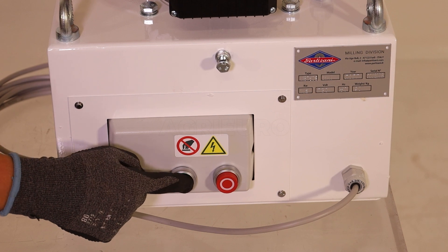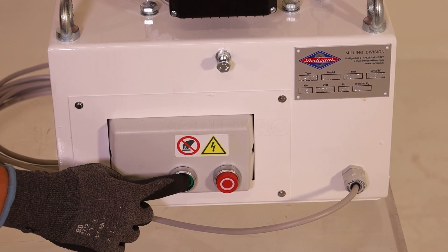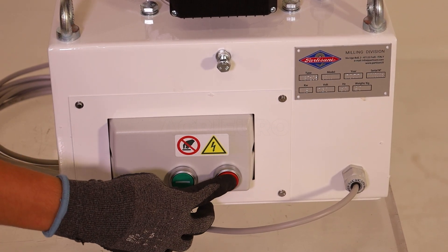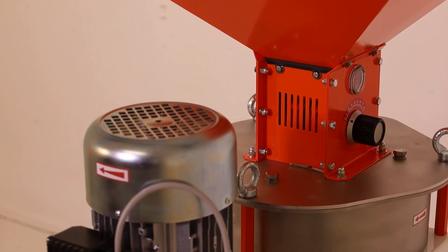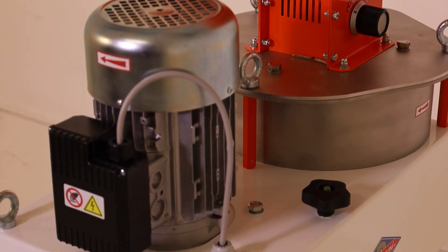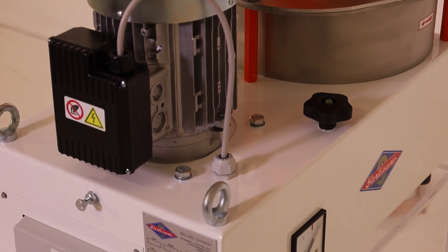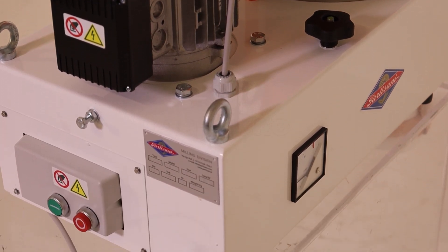L'involucro, ricavato da lamiera d'acciaio scatolata e saldato, fornisce un sostegno inossidabile all'intero apparato. La camera di macinazione, interamente realizzata in acciaio inox, assicura che la farina prodotta sia priva di contaminazioni esterne, garantendo purezza e qualità in ogni utilizzo.